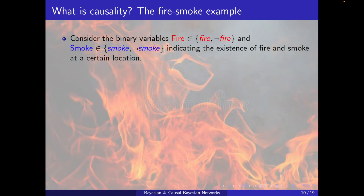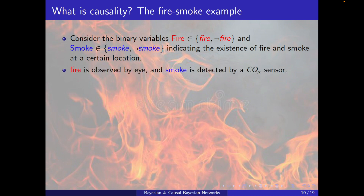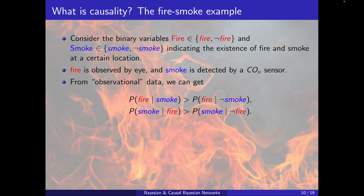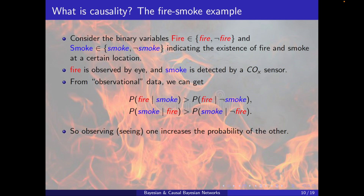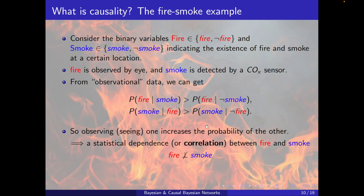Hello and welcome to section 2: Intervention. I want to go through an example to explain some notions of causality — the fire-smoke example. Consider the binary variables fire and smoke indicating the existence of fire and smoke at a certain location. Fire is observed by eye and smoke is detected by a CO sensor. From observational data, we see that observing one increases the probability of the other, so a statistical dependence or correlation between fire and smoke exists.